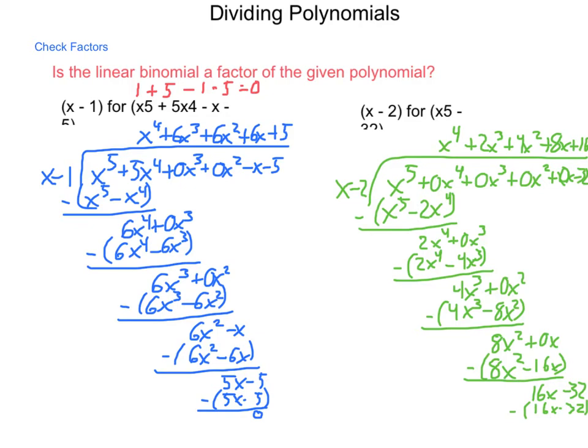So, is x - 2 a factor? Yes, it is. If we were to substitute in the 2, that would make this 0 into here. 2 to the 5th power is 32. 32 - 32 is 0. So, a couple of ways of checking and working around while we're doing our long division.